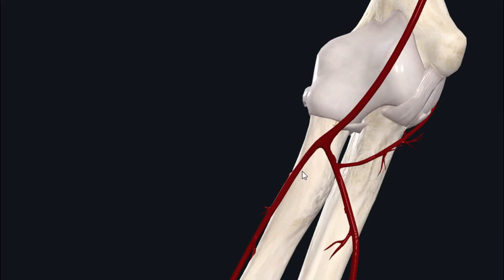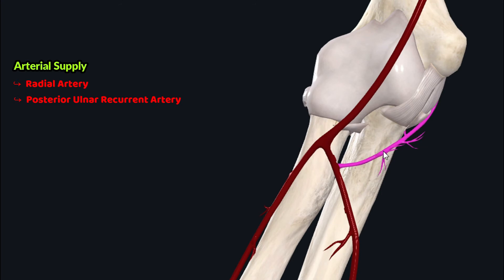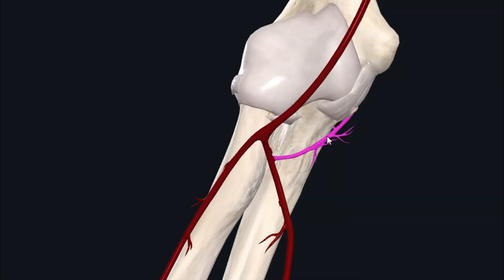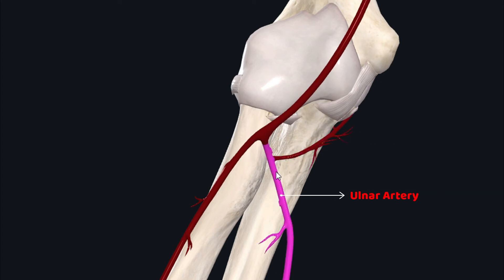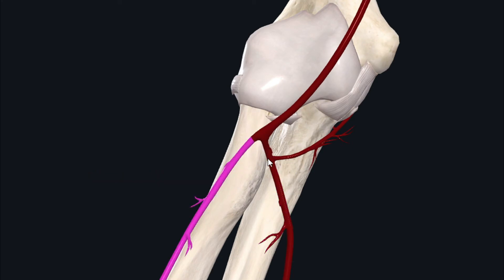The flexor carpi radialis receives its arterial supply from two arteries: the radial artery and the posterior ulnar recurrent artery. The posterior ulnar recurrent artery arises as a posterior branch from the ulnar artery. The ulnar artery together with the radial artery arise as the medial and lateral divisions of the brachial artery respectively.